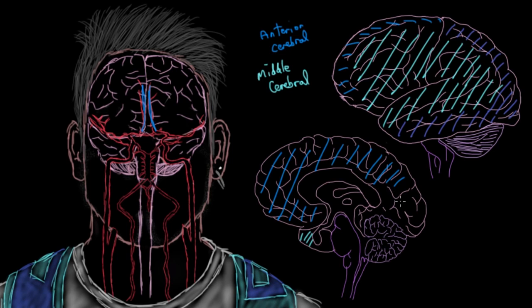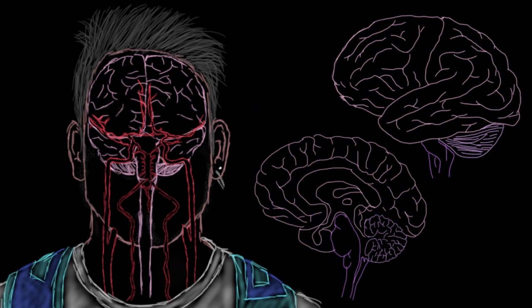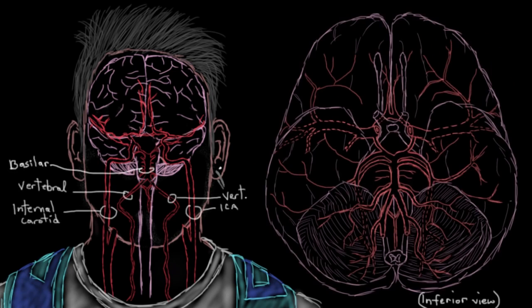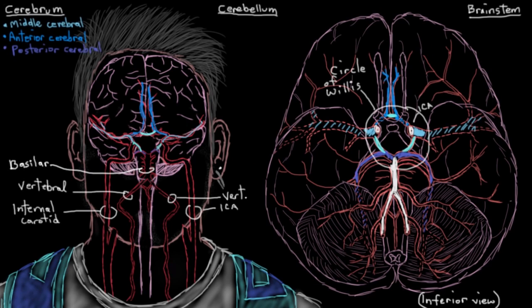The posterior cerebral artery covers the occipital lobe on both the outside and the inside, and that portion of the temporal lobe on the outside and the inside. That's the major blood supply to the cerebrum. Now let's look at the blood supply to the cerebellum.